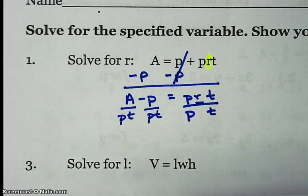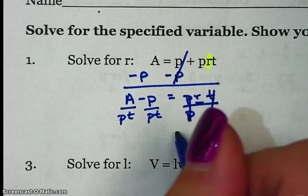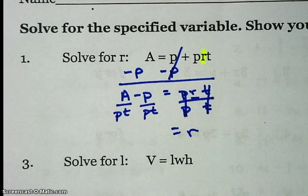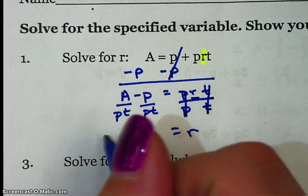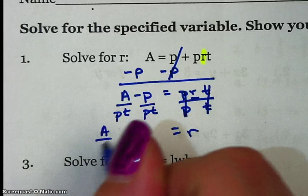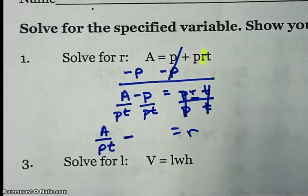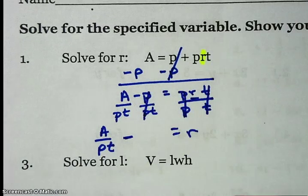Over here, I have to do every single term by PT, not just the whole big thing, each term. So on the right, I'm left with R, which is what I was trying to solve for. Over here on the left, I have A over PT minus, now here's why we have to do each term separately.